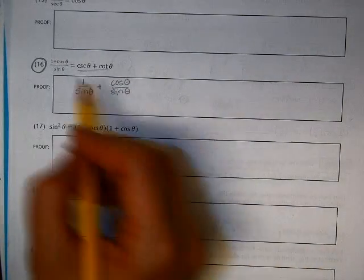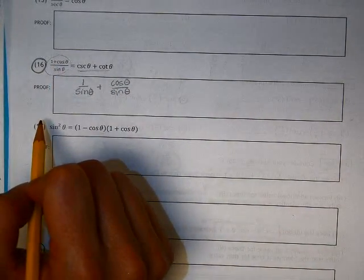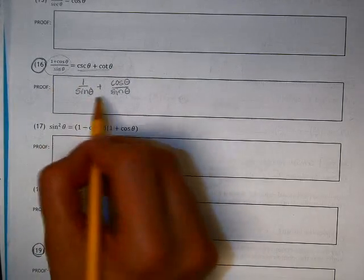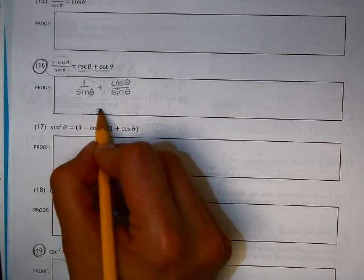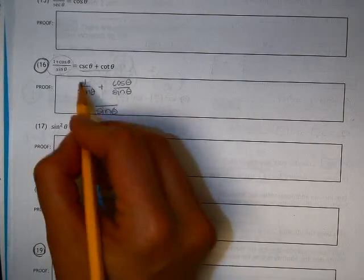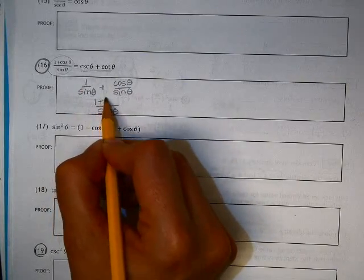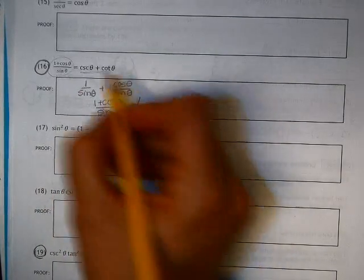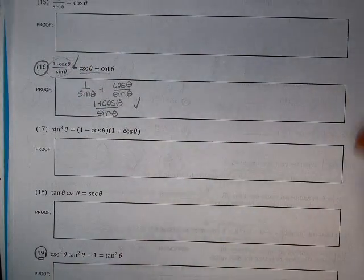And if you look now, you always want to look back at where you're headed. You want to have one denominator, and oh my gosh, we have the same denominator. And then, if I have the same denominator, I add the numerators, and magic, it looks exactly like I had over there.